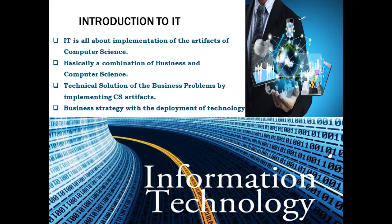Now coming towards information technology. As I told you earlier, in computer science you actually develop or propose solutions to technical problems. Information technology is all about the implementation of the artifacts of computer science. In computer science you develop a solution to a problem, and then this solution is actually implemented or used by information technology. Basically, IT is a combination of business and computer science. The solutions developed by computer scientists are actually implemented in business and other day-to-day economic affairs. Computer networking is a very important and hot area of computer science.